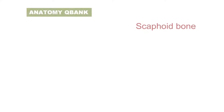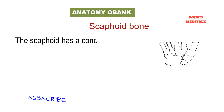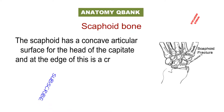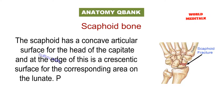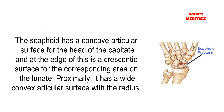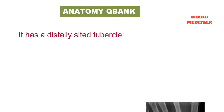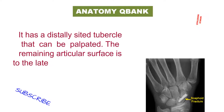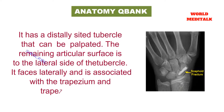The scaphoid has a concave articular surface for the head of the capitate. At the edge of this is a facet surface for the corresponding area on the lunate. Proximally, it has a wide convex articular surface with the radius. It has a distal-sided tubercle that can be palpated. The remaining articular surface is to the lateral side of the tubercle, facing laterally, associated with the trapezium and trapezoid bones.